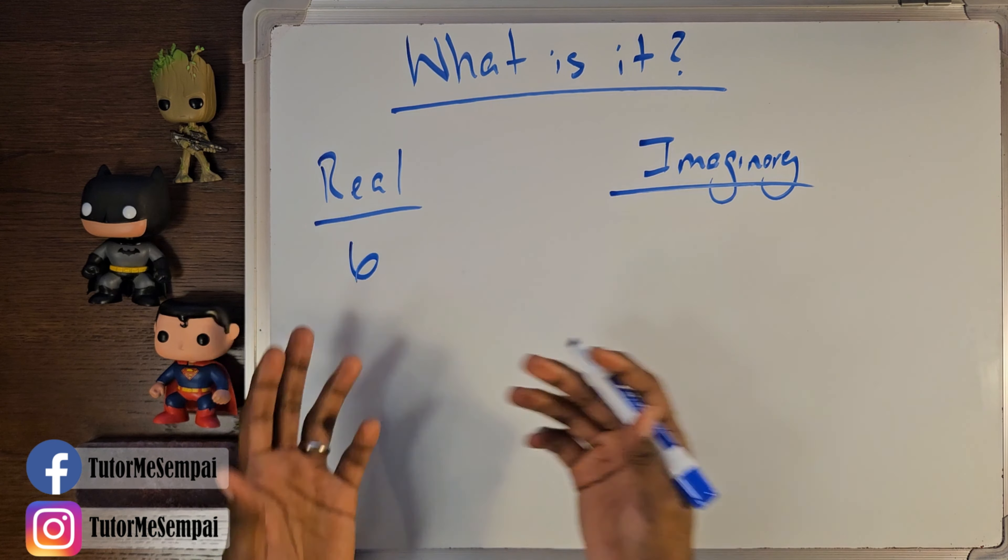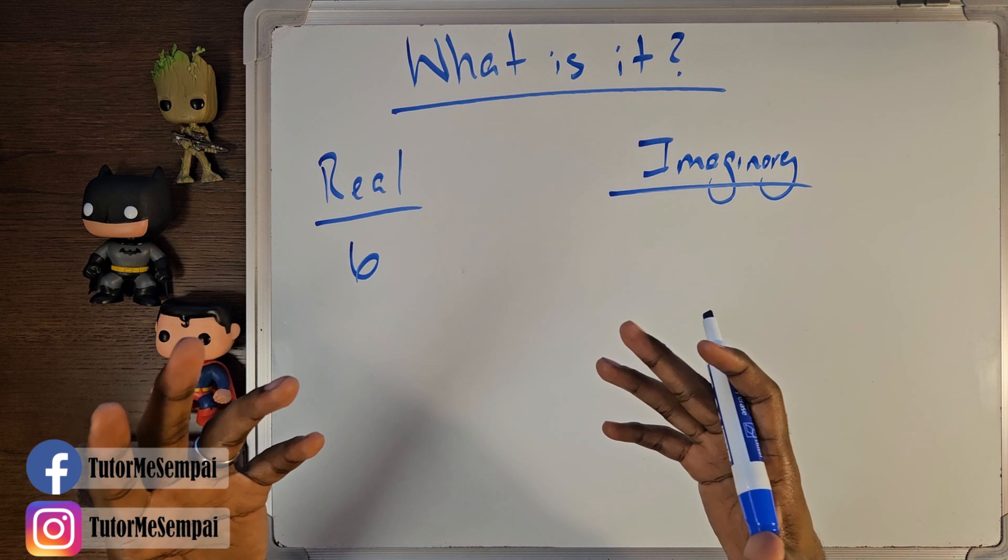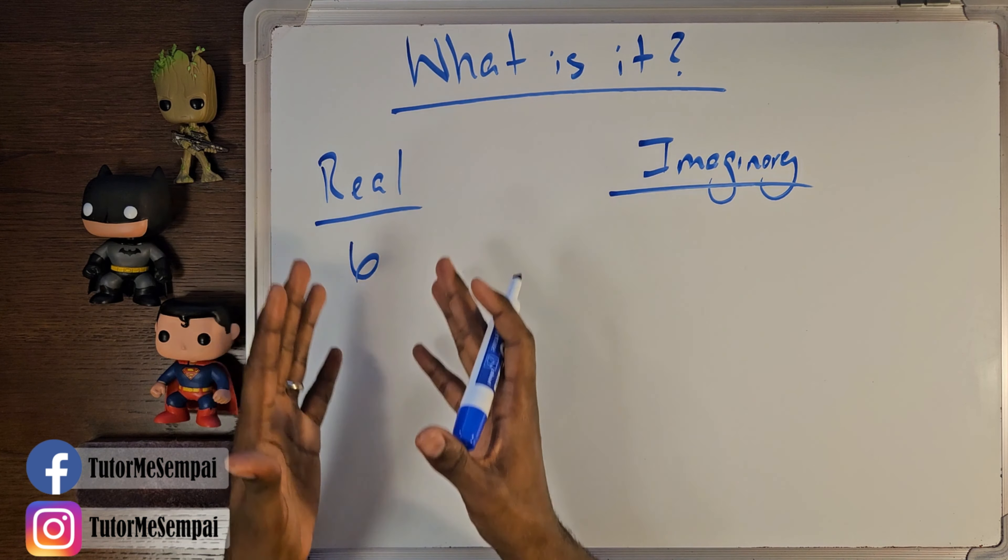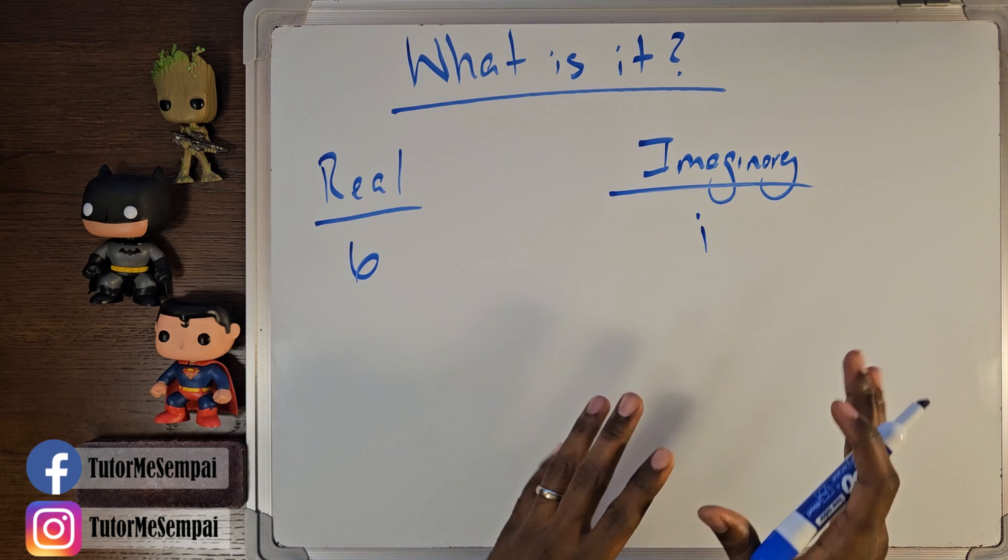And we gave a bunch of examples, so we know that a real number would be like 6. You have whole numbers, natural numbers, integers, you have your rational numbers, your decimals, your irrational numbers. So these are gonna be your real numbers, and we said your imaginary numbers will have that i there.